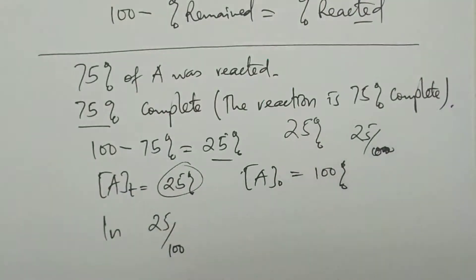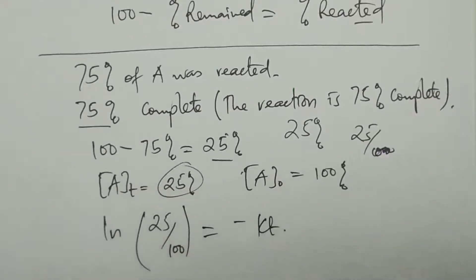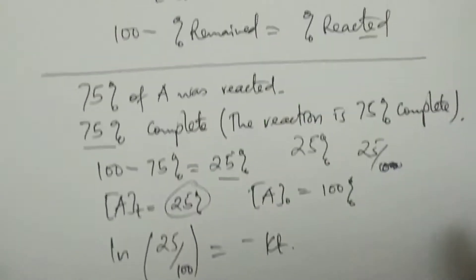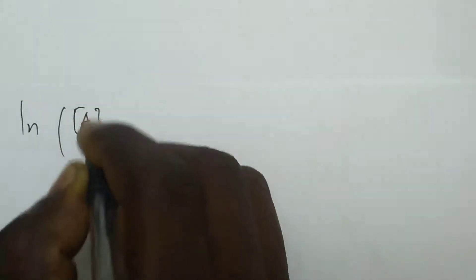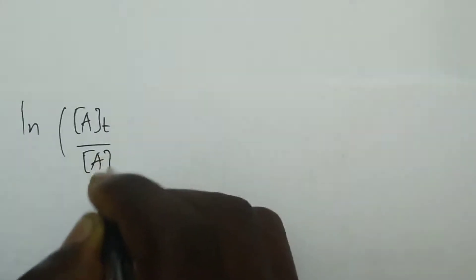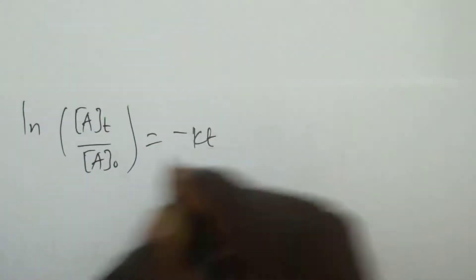If you need to calculate time, then use negative KT to calculate the time. This is how we solve these problems, which require true knowledge.